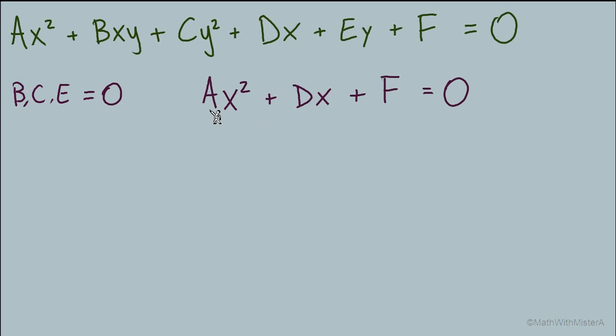Those terms correspond to terms with an x squared, first degree x, and a constant. So an example if we throw in numbers for a, d, and f could be 1x² + 7x + 12 = 0. And here we can see we have a quadratic equation with one variable.